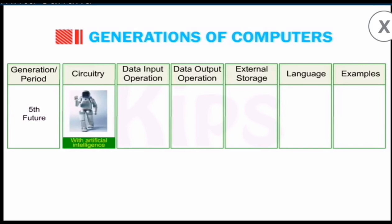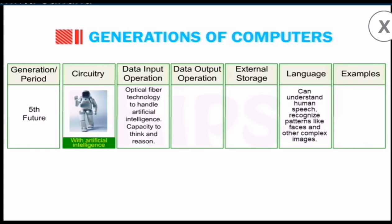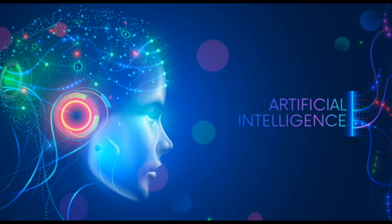Now fifth generation, which may be our future. We will use robotic technology with artificial intelligence. Data input will be optical fiber technology to handle artificial intelligence and capacity to think and reason. Artificial intelligence is a technique in which the computer, the robotics, understand the facial expressions of the human, feelings of the human, and try to respond in the same manner.